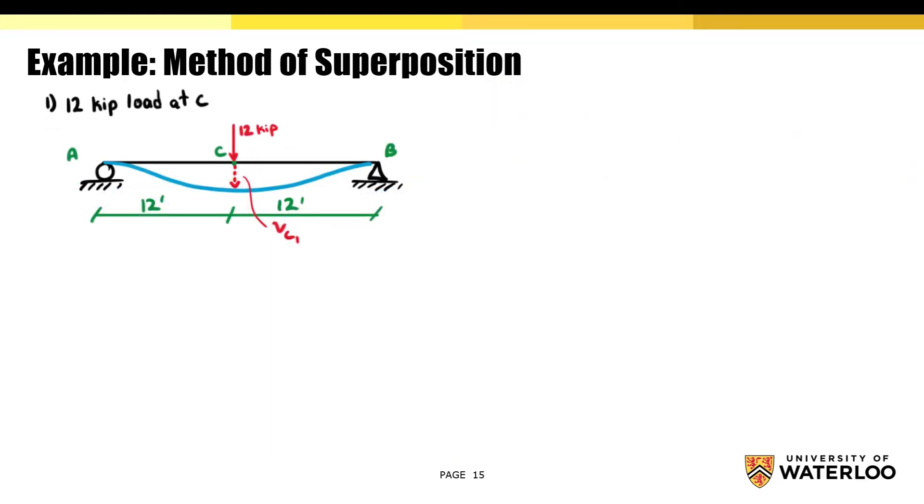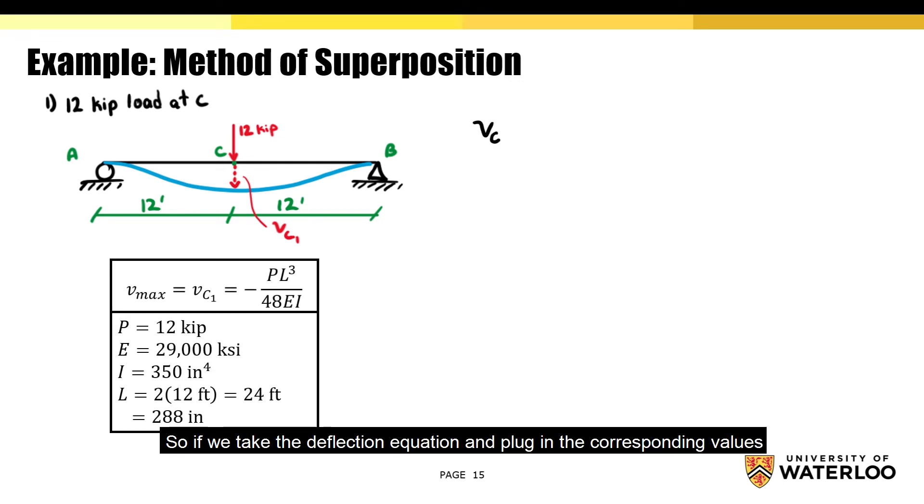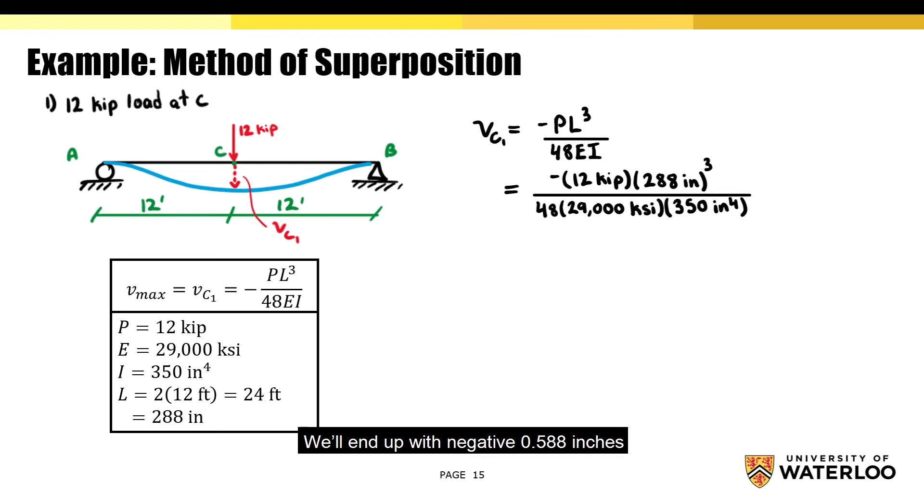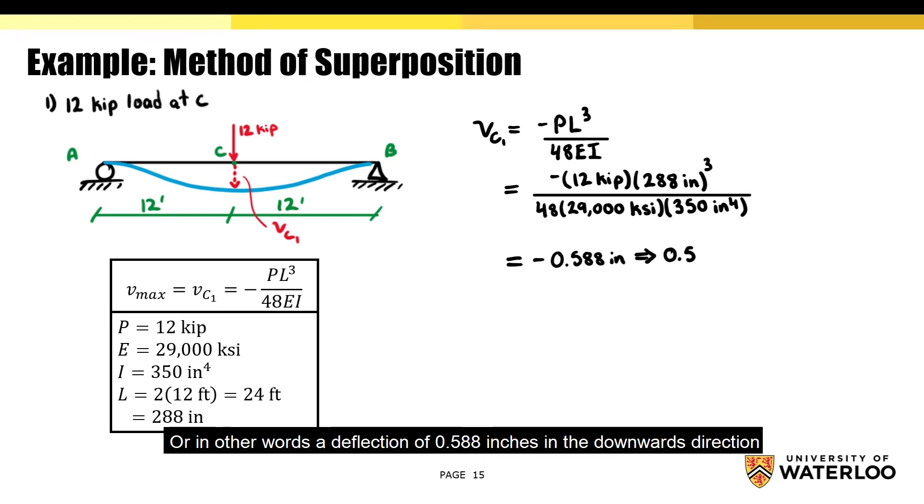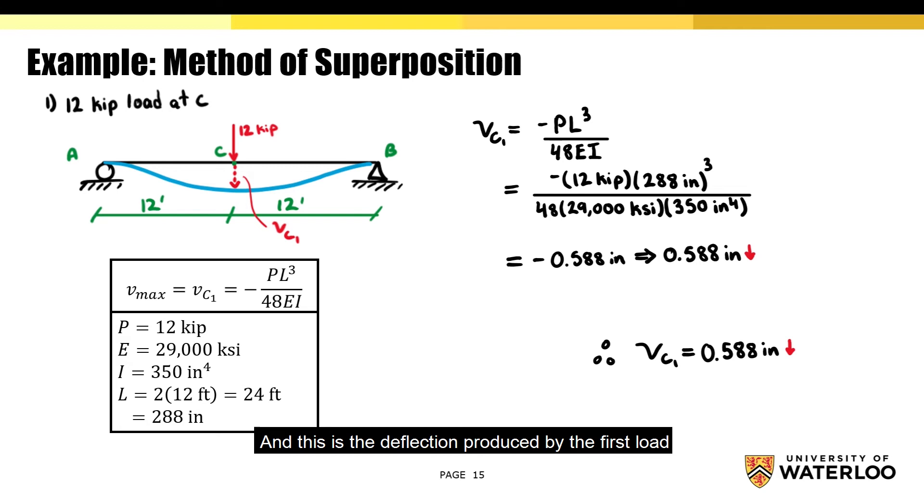On this slide, we'll solve for the deflection produced by the first load. I've included the equations we'll be using along with the corresponding values right under the diagram. So if we take the deflection equation and plug in the corresponding values, we'll end up with negative 0.588 inches, or in other words, a deflection of 0.588 inches in the downwards direction. And this is the deflection produced by the first load.